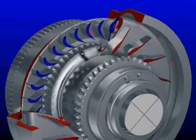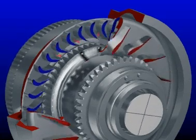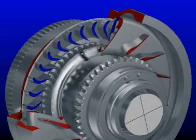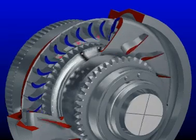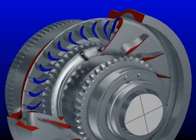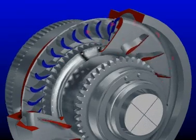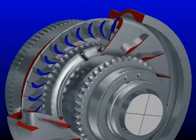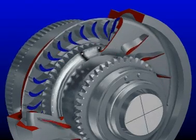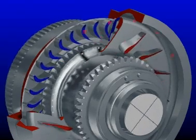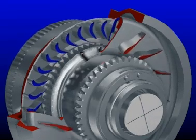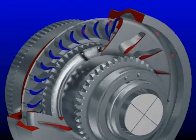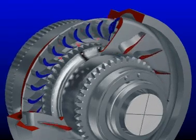The torque converter connects the engine to the transmission. Its purpose is to hydraulically transfer torque from the engine flywheel to the transmission, using oil to send that torque from the engine to the transmission.